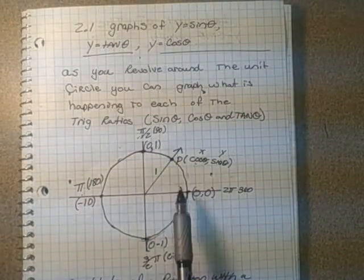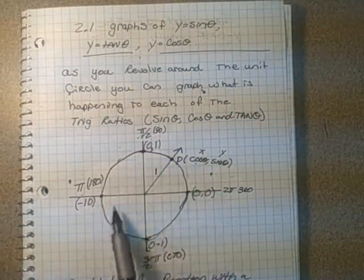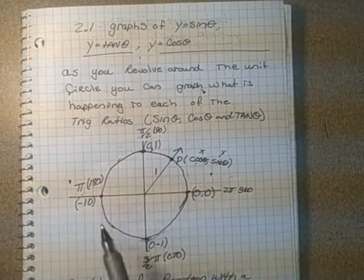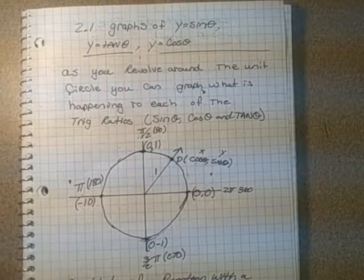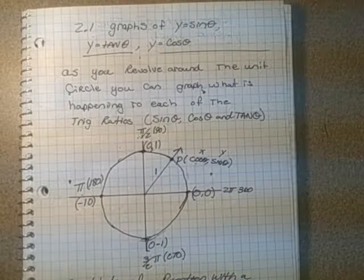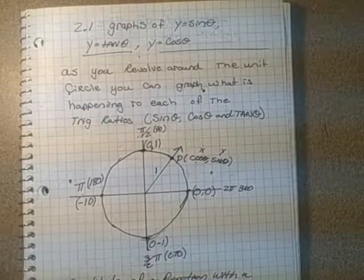This pattern repeats as you keep going around the circle. That's one period, and that's what the sine graph looks like. That's how the unit circle works.